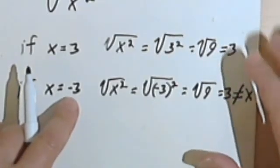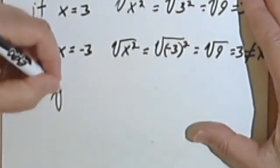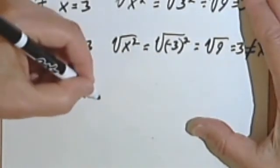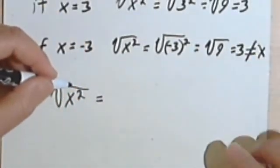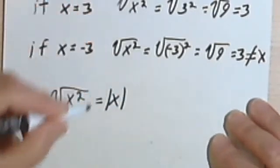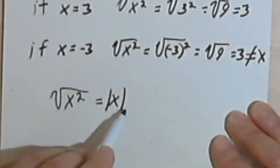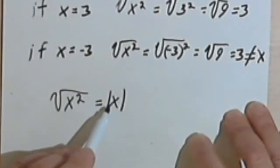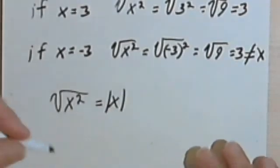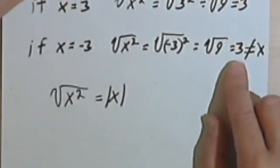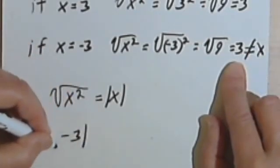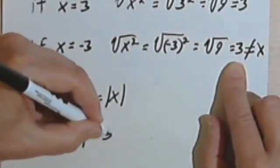So technically, when we want to solve a problem like the square root of x squared, what we're going to write is that the square root of x squared equals the absolute value of x. These two bars here around a number or a variable mean absolute value, which is another way of saying the positive value. So the absolute value of negative 3 is just a positive 3.